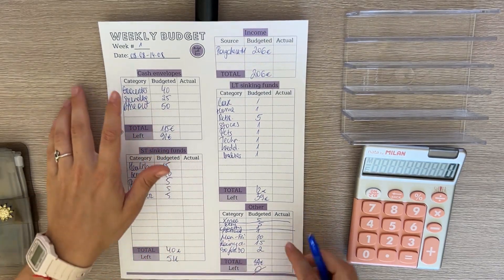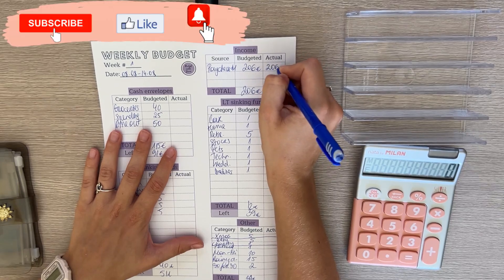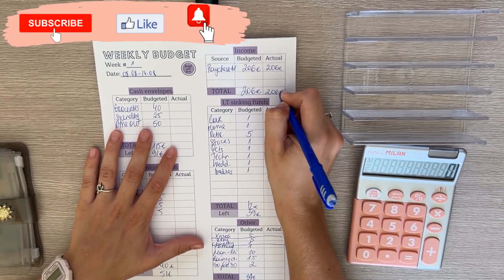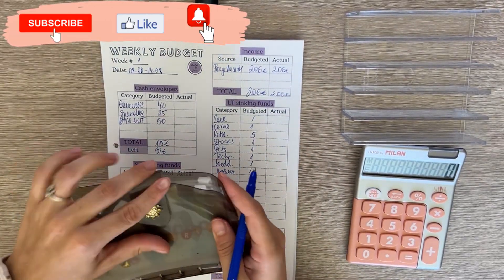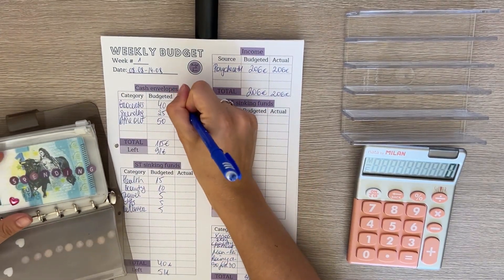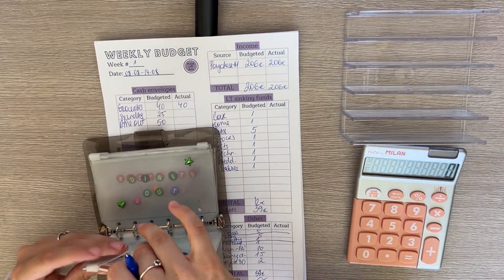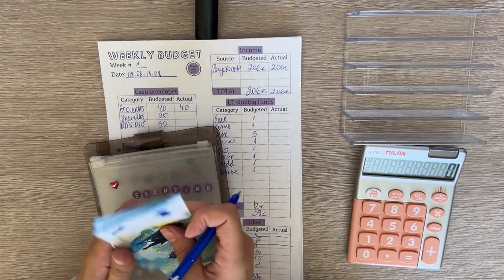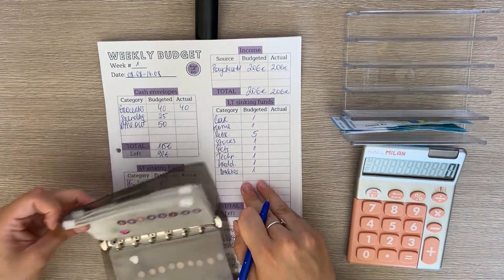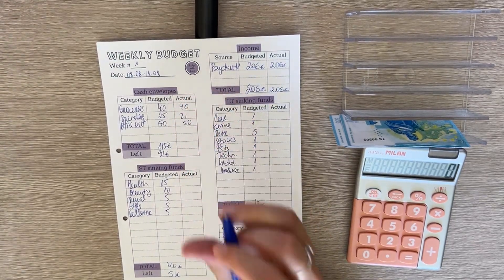So we are done with those, and now let's move on to the weekly budget. With income we did have 206, that didn't change, so the total we're working with is 206. Let's check our cash envelopes for rollover. Groceries is empty, so we did spend 40. Spending has a rollover of 1, 2, 3, 4, so we did spend 21. And then dine out has nothing, so we did spend 50.